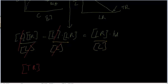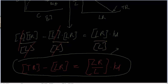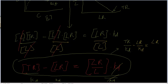Now the equation becomes TR minus LR equals LR over L times KD. Next, I'm going to divide the entire equation by KD. So KD gets cancelled and the equation becomes TR over KD minus LR over KD equals LR over L.